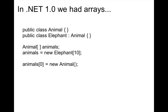Let's see what was happening in .NET 1.0. Of course .NET 1.0 came with arrays. In the first two lines I define a class called Animal and a class called Elephant which inherits from Animal. In lines 3 and 4 I create an array of animals and populate it with elephants. Then on the last line I assign the first element in the array to a new animal. Think about what would happen when you compile it and run it.